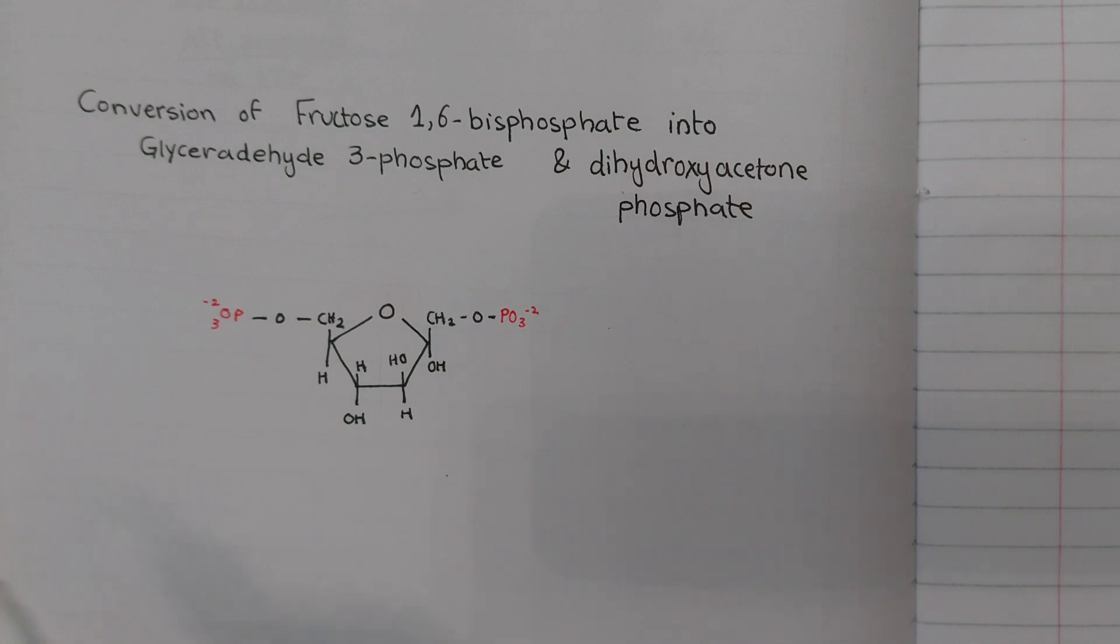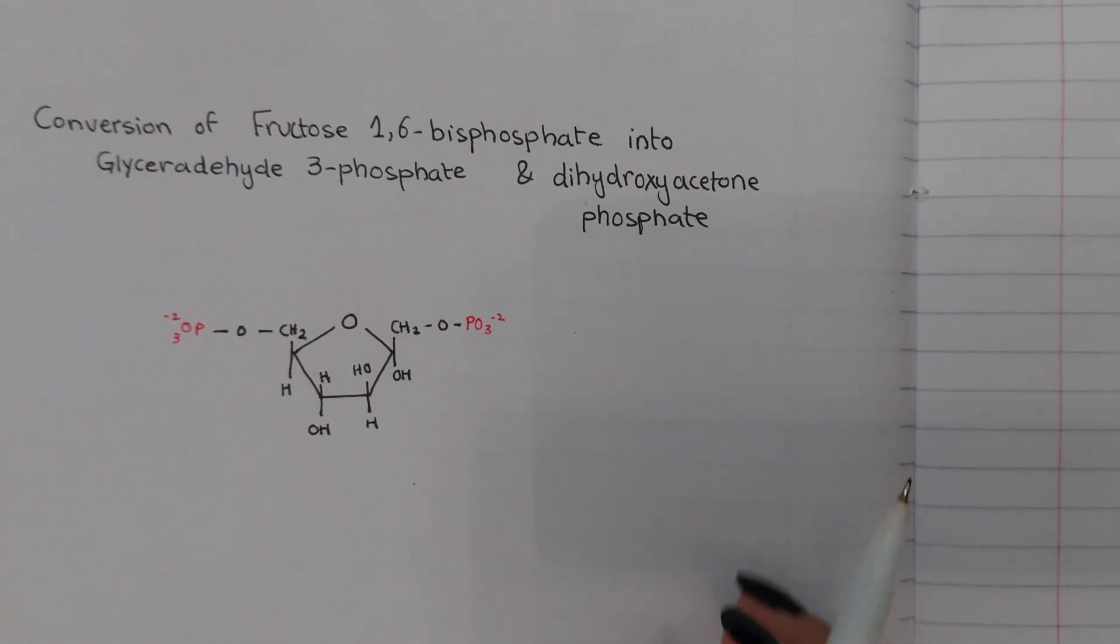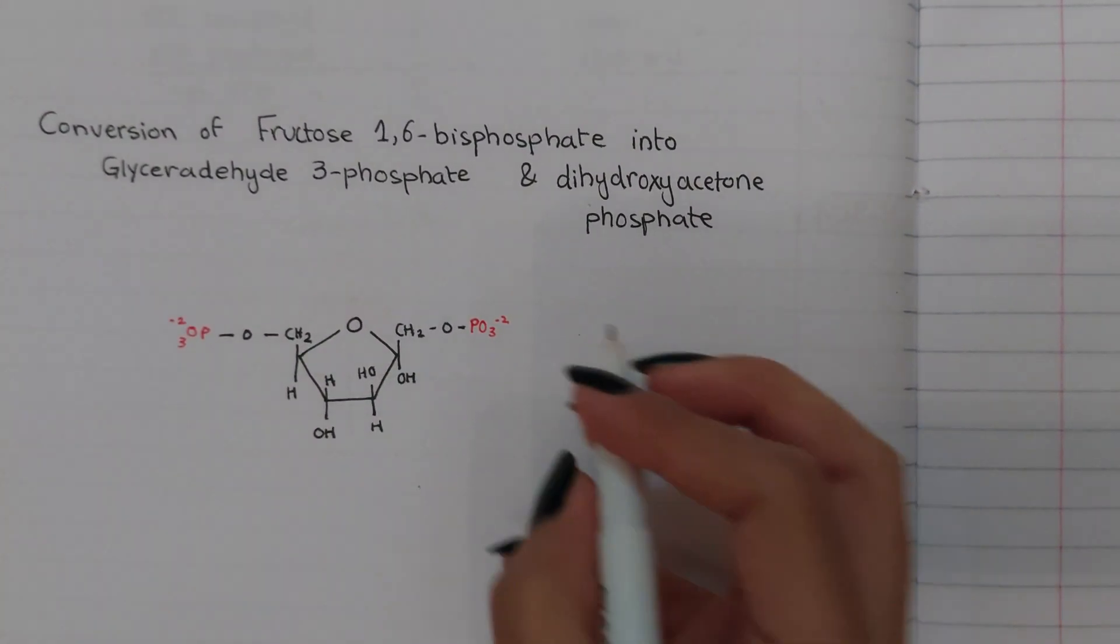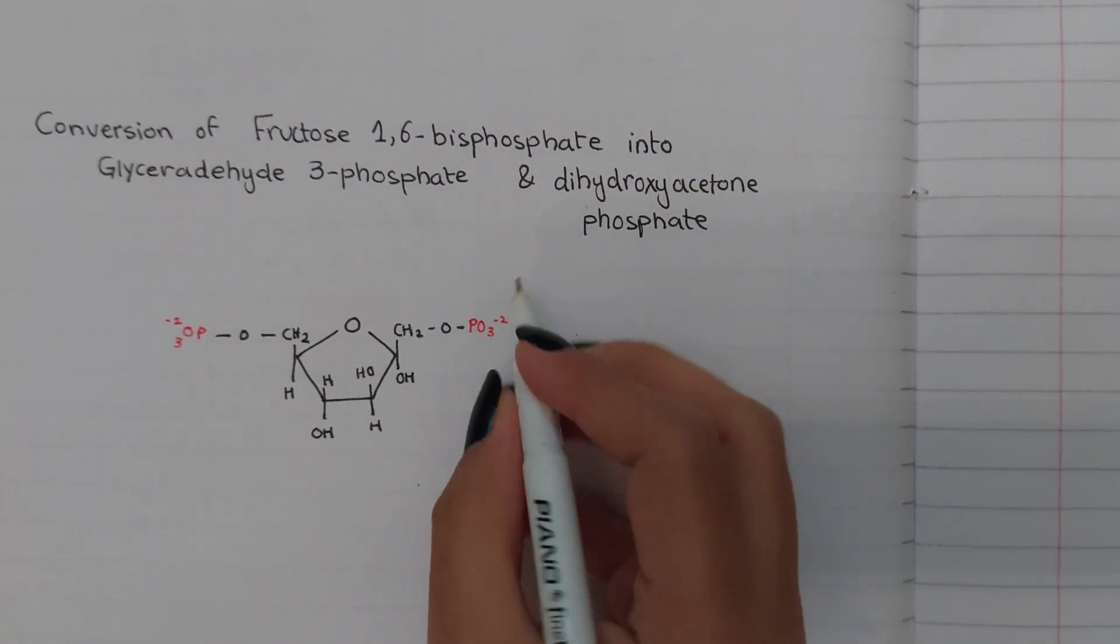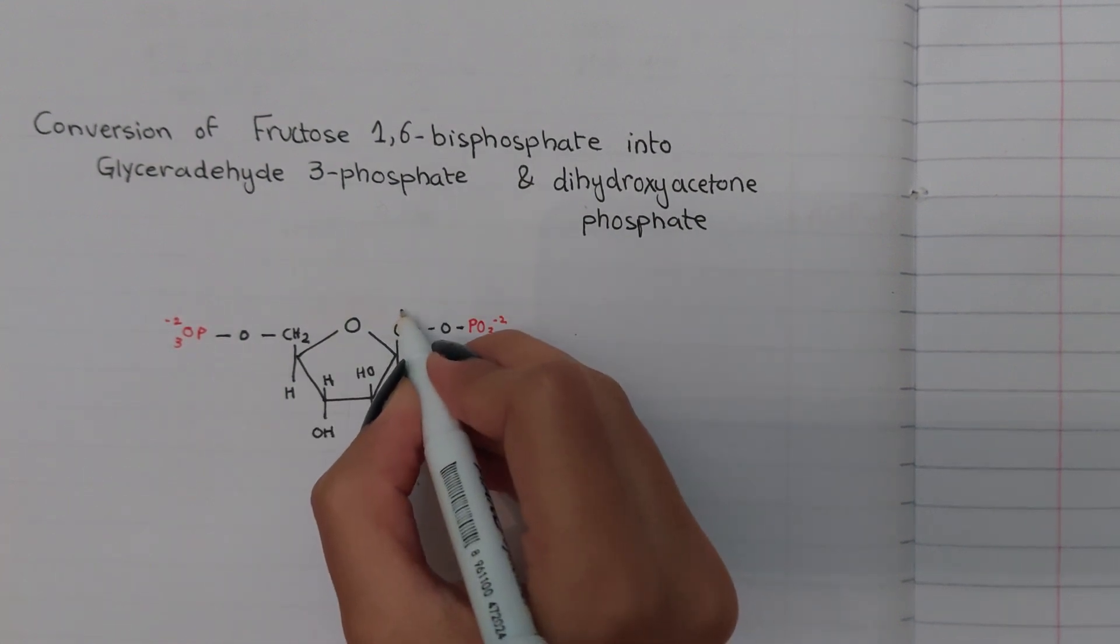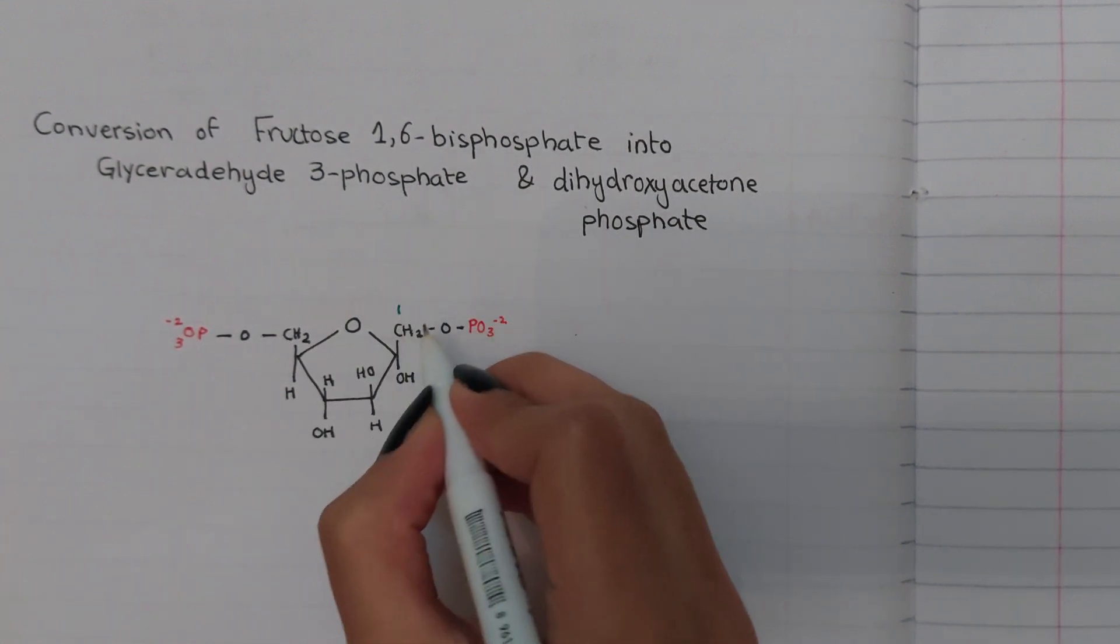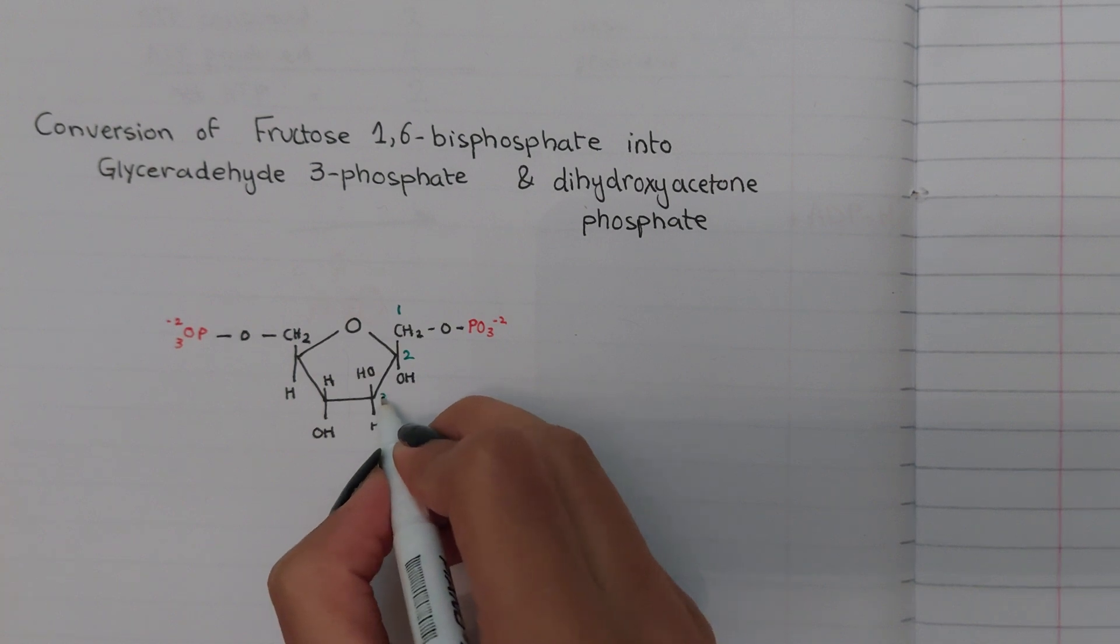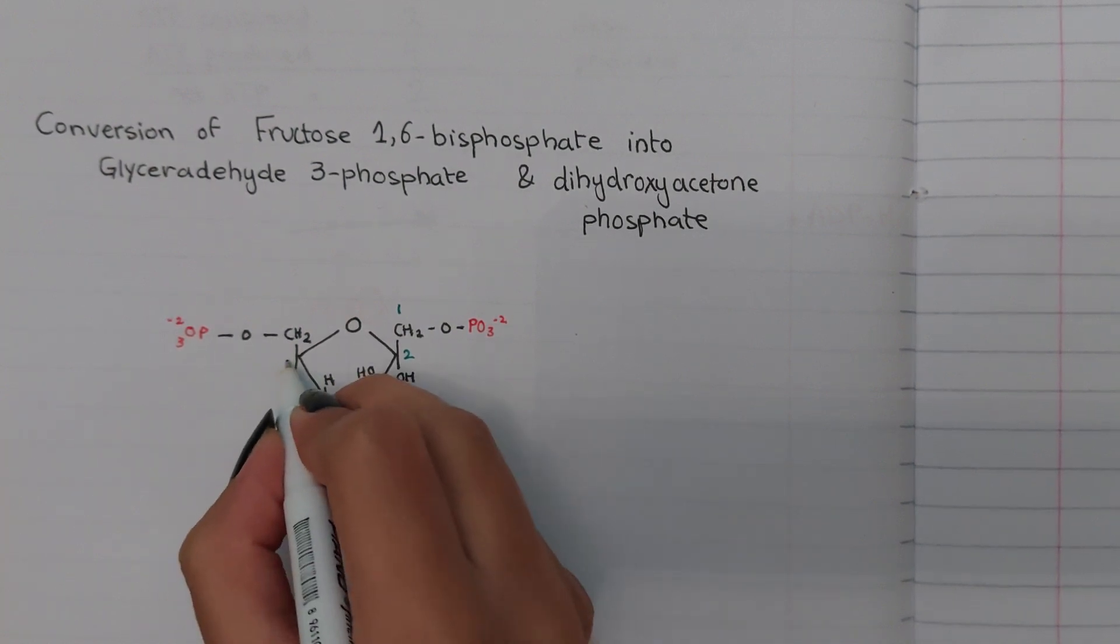It's the fifth step of glycolysis. To make things easy to understand, I will be giving numbers to the carbons on this, so this is the first carbon, second, third, fourth, fifth, and sixth.